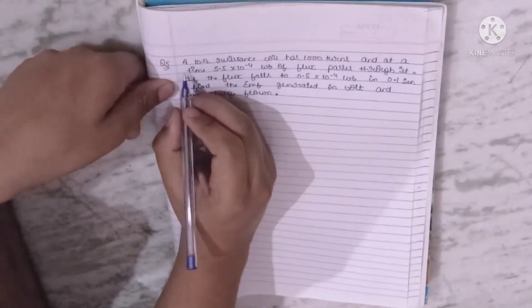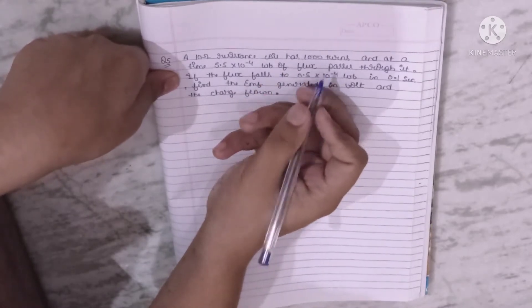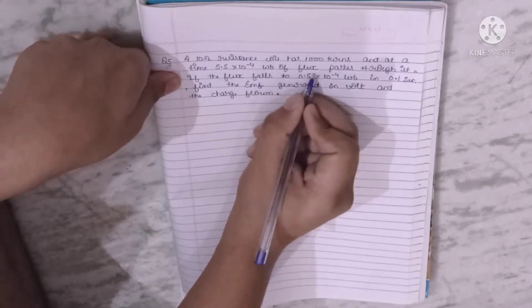Numerical number 5. A 10 ohm resistance coil has 1000 turns and at a time 5.5 into 10 to the power minus 4 weber of flux passes through it.